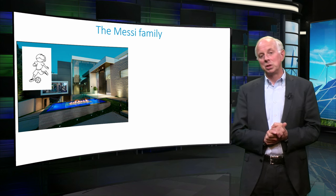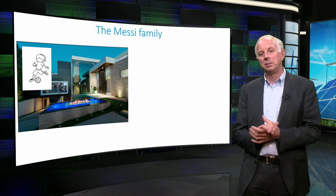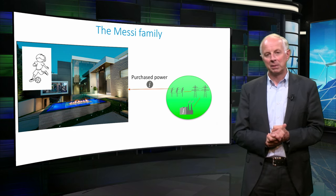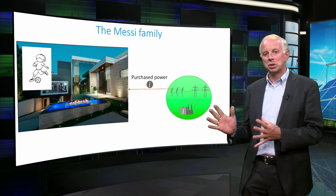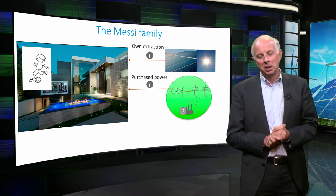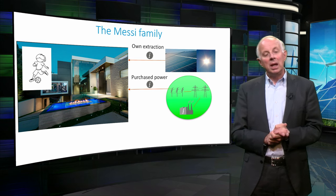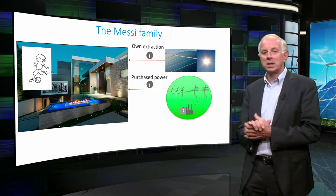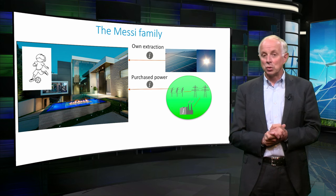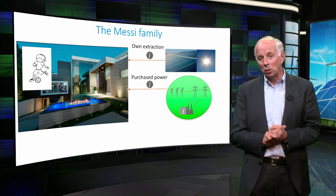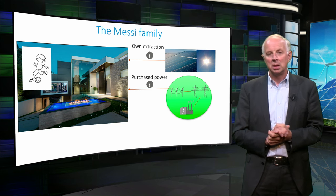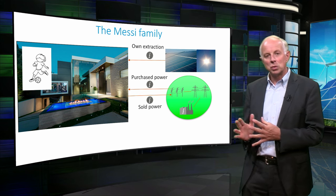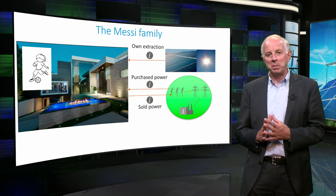Mr. Messi lives in a nice house in Barcelona with his wife and son. Their house is connected to the electricity grid, from where they get power every day. This results in a flow called purchased power. But Messi has quite a sustainable mindset and invested in solar panels on his roof. This leads to the flow own extraction. Because it is so sunny in Barcelona, Mr. Messi generates more solar power than he needs at certain moments. The power surplus is sold to the national grid. With these flows we can determine the net energy available for the Messi family.